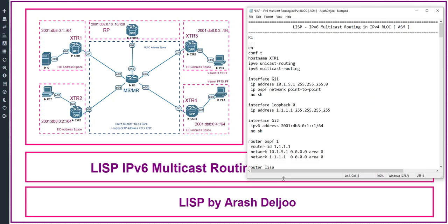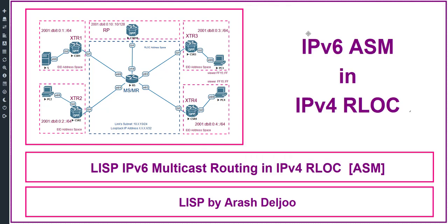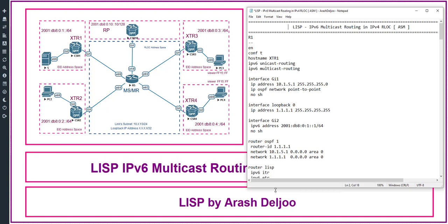I configured this scenario before and I'm going to review only the configuration. After that, maybe we need to add some commands, and finally we will test the function of this scenario. As you can see, we have XTR1, XTR2, XTR3, and XTR4. Because we are using ASM or Any-Source Multicast, we need one RP — this is CSR10, and this is the IP address of the RP.